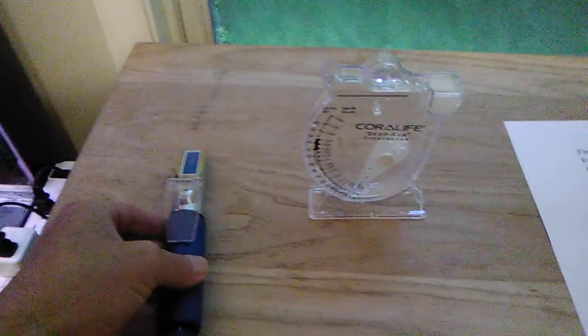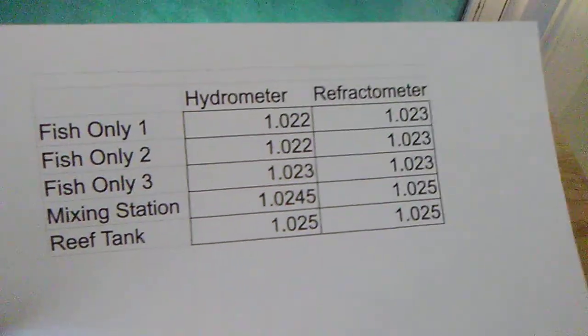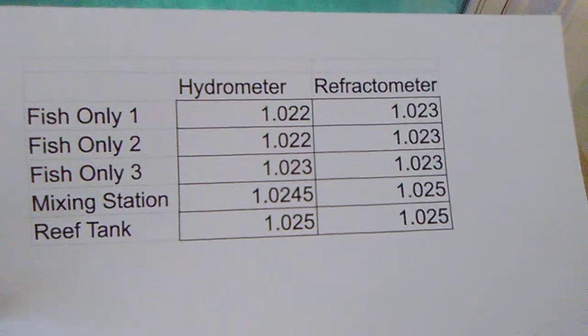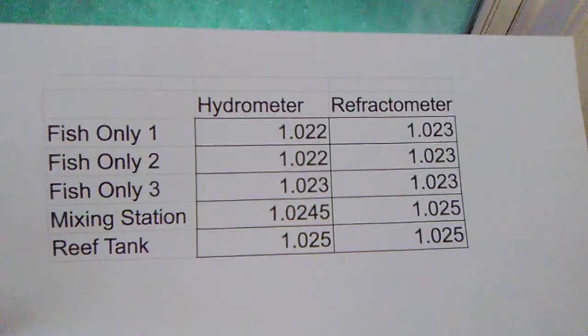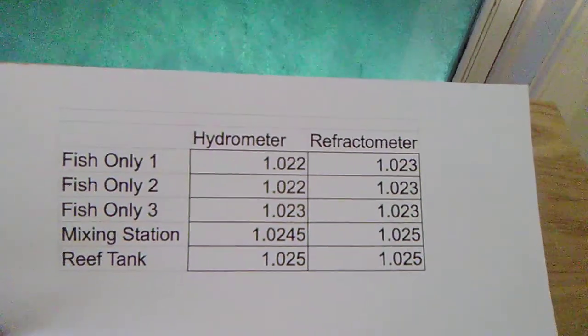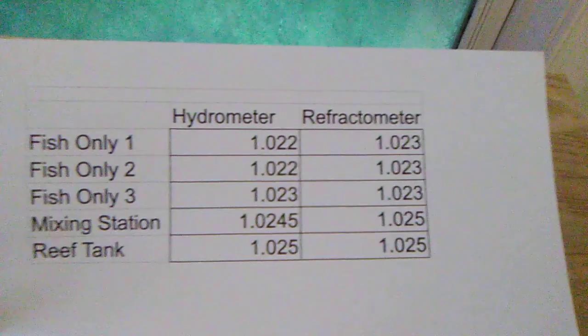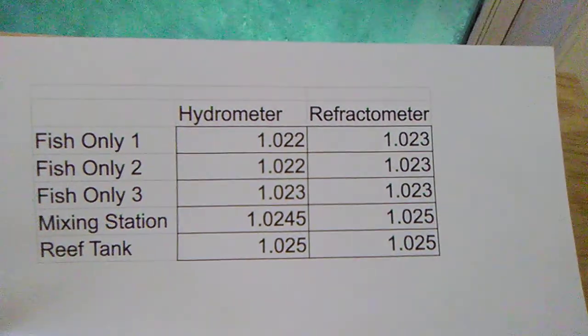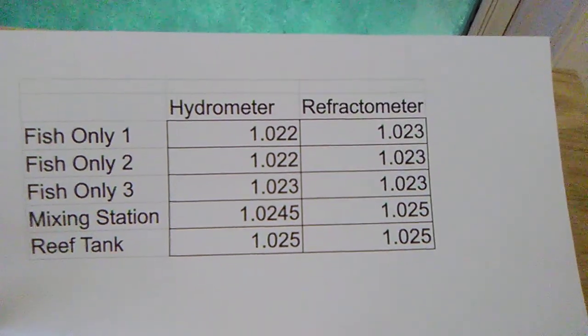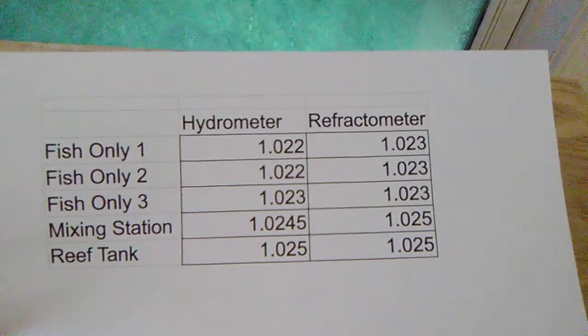So I have three fish only tanks, a mixing station for saltwater, and I have a reef tank. You can see the numbers here: 1.022, 1.023, 1.022, 1.023, 1.023, 1.023, 1.0245, 1.025, 1.025, 1.025. This thing is in great agreement, really great agreement with my refractometer. So I'm very excited about this.